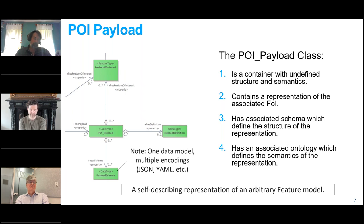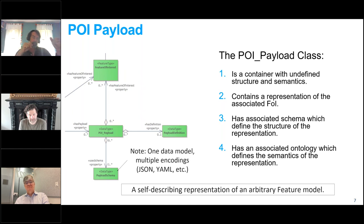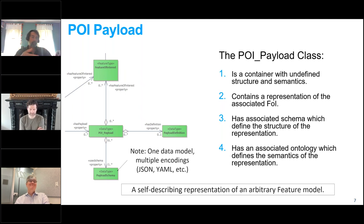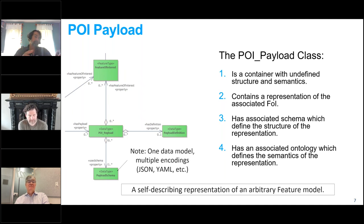Associated with the POI is the POI payload, which is essentially an empty box. It has a reference to the feature of interest, so given the POI payload I can identify the feature in the dataset that this POI describes. It has at least one schema — you can have multiple because, for example, you can have a JSON and a YAML schema for the same data model. The schema tells you how to parse and gives you the semantics of the payload. There's also an optional link to a definition — an ontology or similar — that provides the semantics of what the different properties mean.